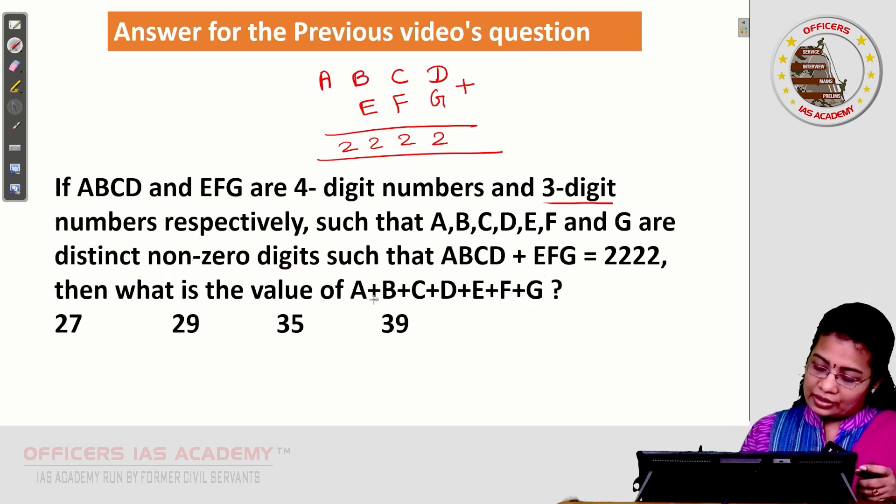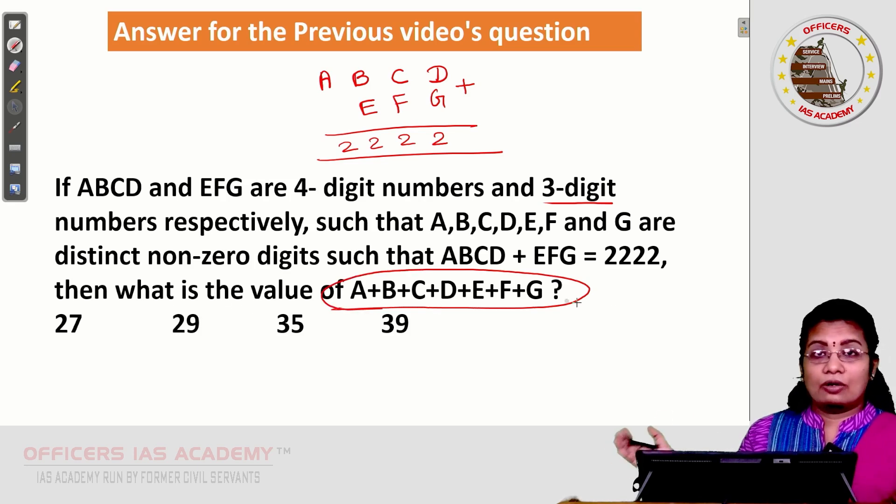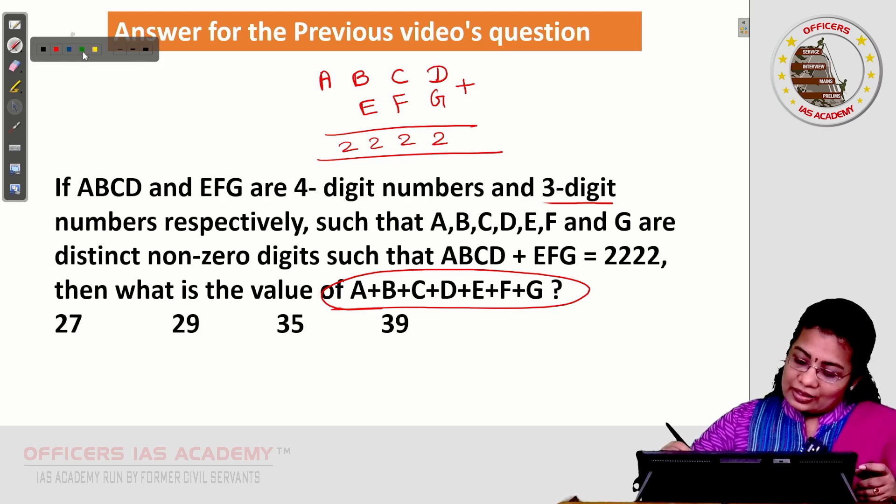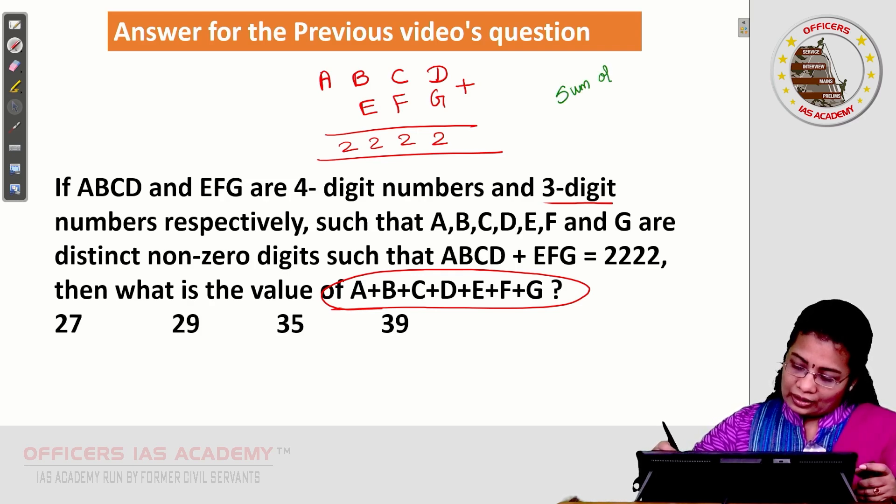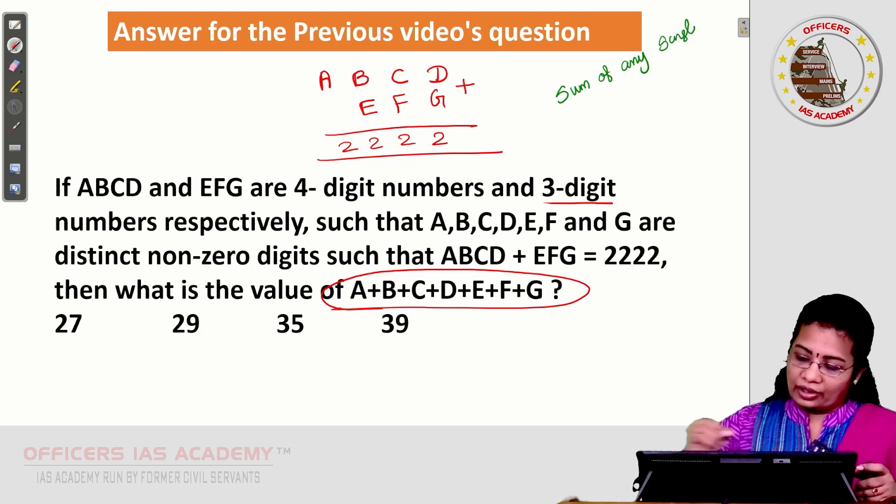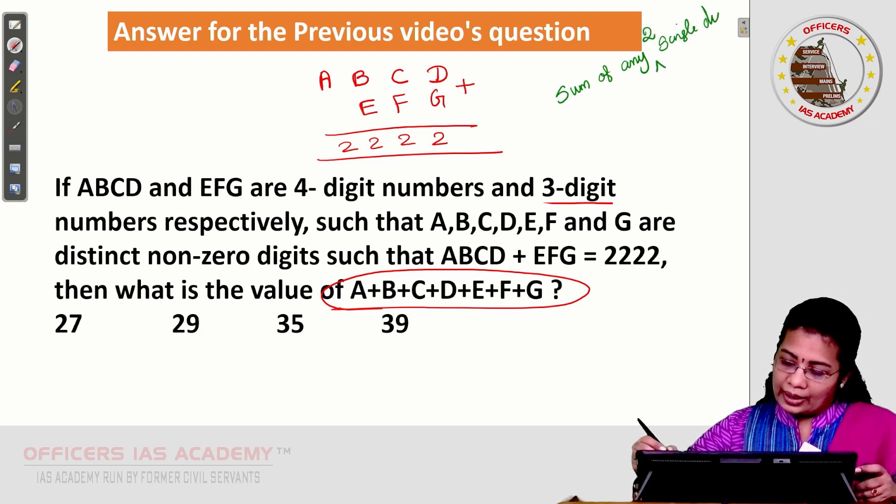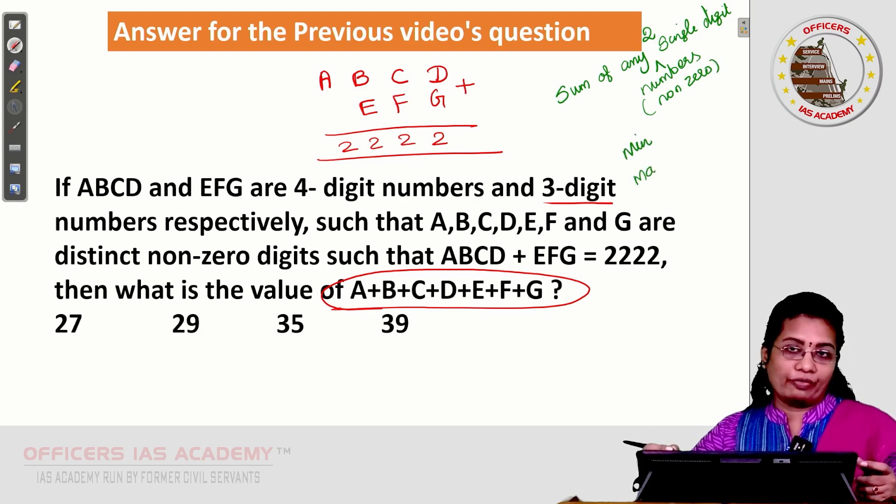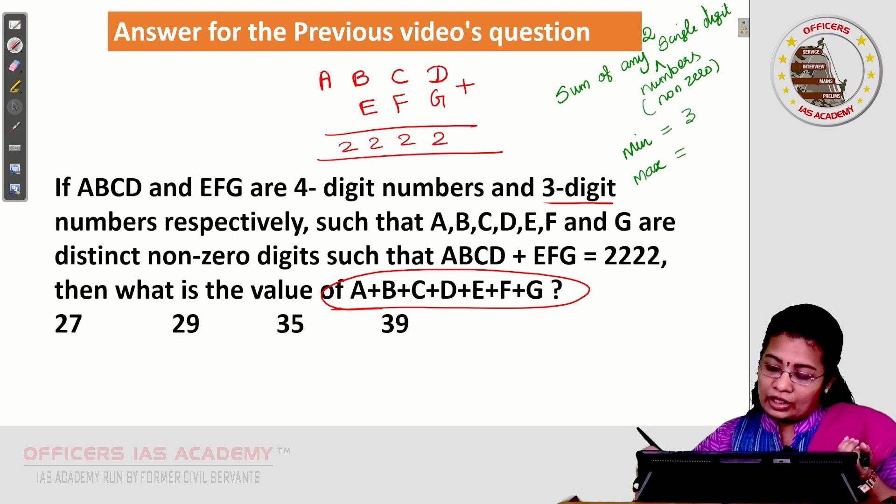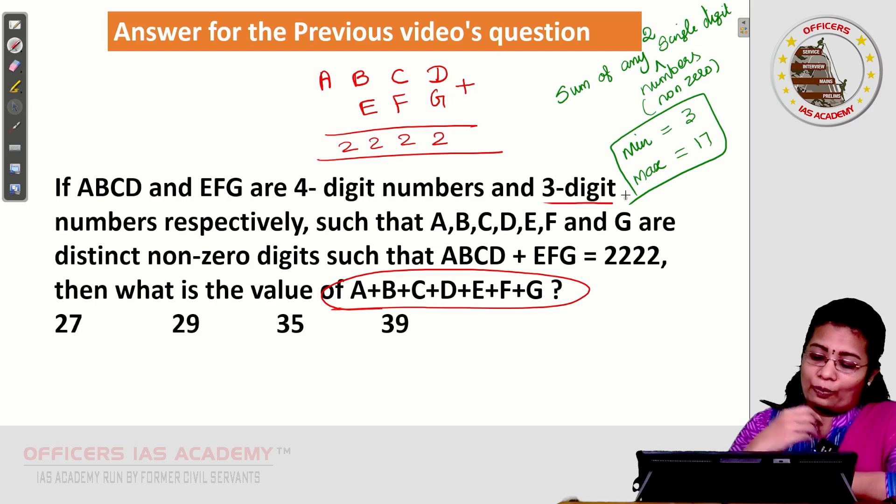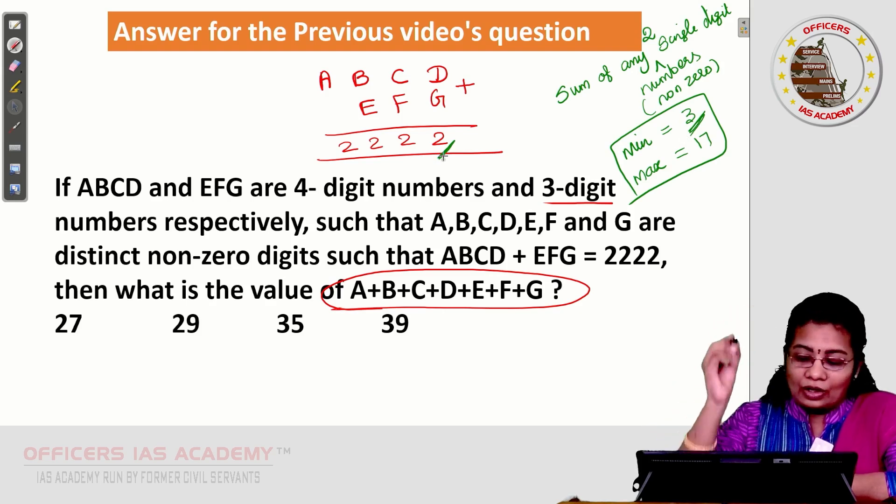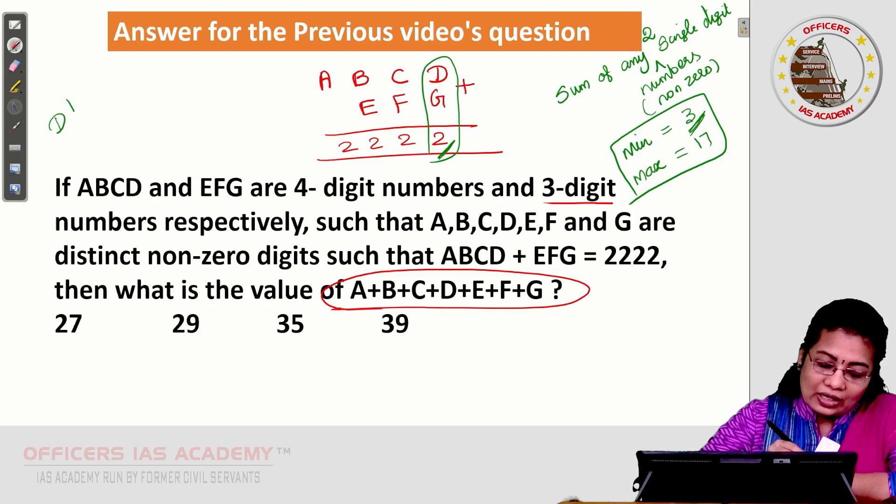Next thing, the requirement is what is the value of A, B, C, D, E, F, G all together? Based on the previous CSAT question, this question I have given. The idea is sum of any 2 single digit numbers, they are also non-zero numbers. What is the minimum value and maximum value of any 2 single digit numbers? Minimum value 3, maximum value 17. As earlier, we have discussed in the previous video. Now, 2 is given. It is not 2 because the minimum value must be 3. The 2 means it has to be 12. I can write D plus G is 12.